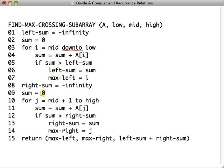You do the same thing for the right. You reset sum to zero. Now you scan from mid plus 1 upwards, adding the numbers as you go. Every time the new sum is greater than the right sum, you record that new right sum and where you found its maximum. Then you return the max left, max right, the two positions, and the two halves summed together.